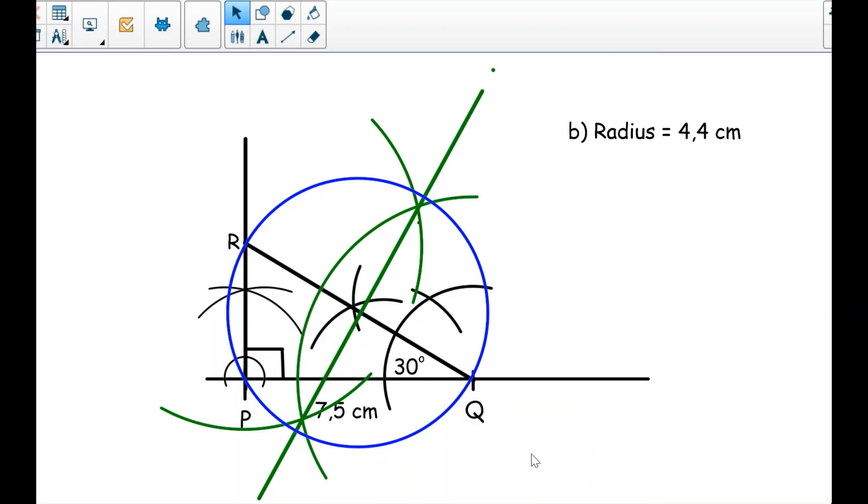I will also take my ruler and measure the side PR. Let me take my ruler and measure PR. Let me align and measure. Here I can see this is 4.3, almost 4.3. Let me align. This is 4.3 according to my ruler.